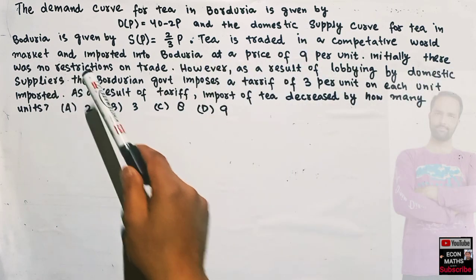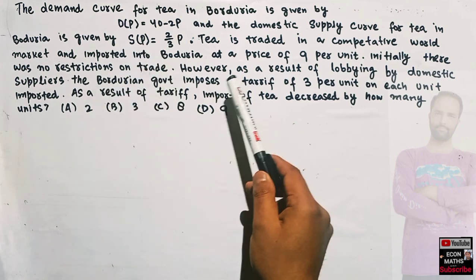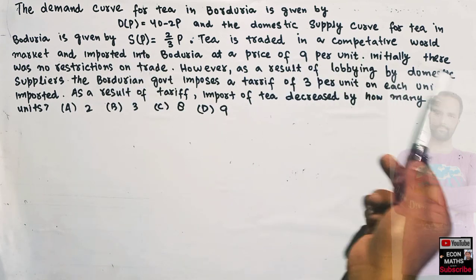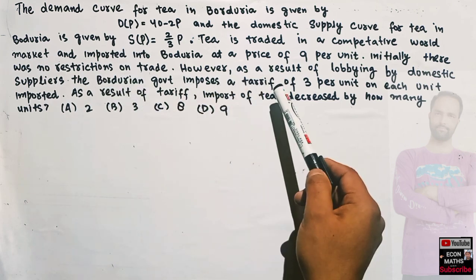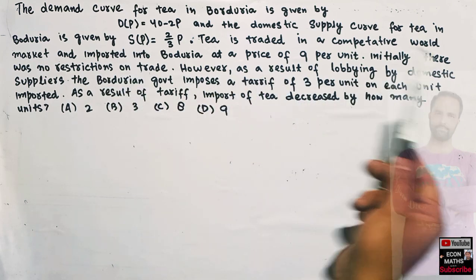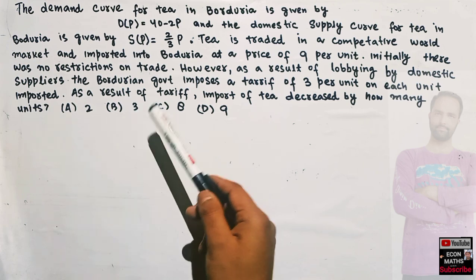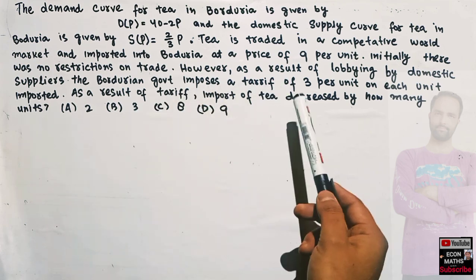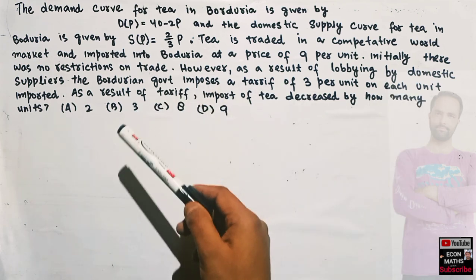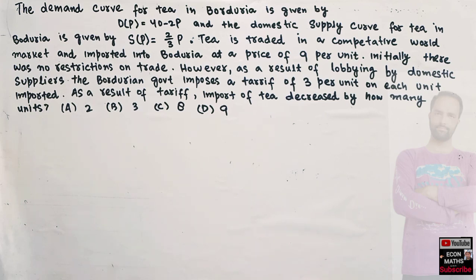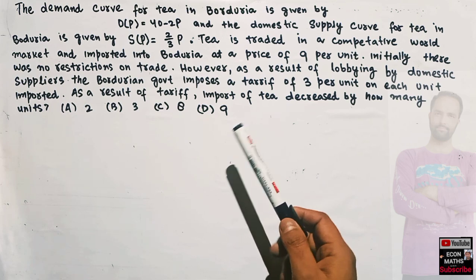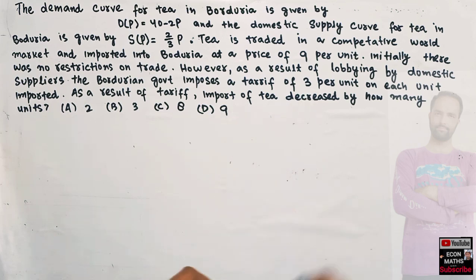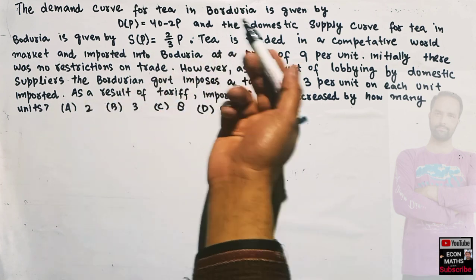Initially there were no restrictions on trade. However, as a result of lobbying by domestic suppliers, the Barodian government imposes a tariff of 3 per unit on each unit imported. As a result of this tariff, imports of tea decreased by how many units? We have to find out the decrease in the units of tea when the import tariff is imposed.